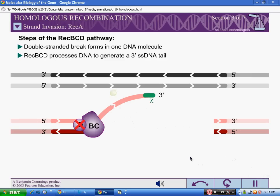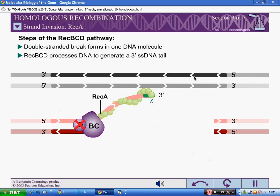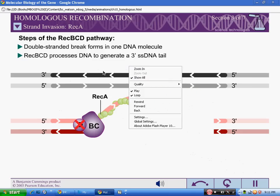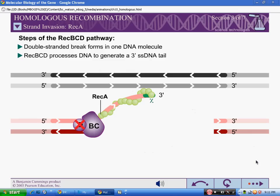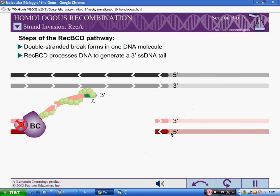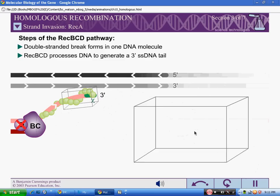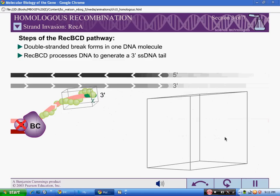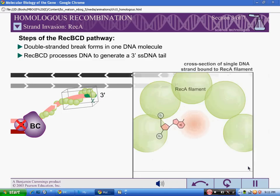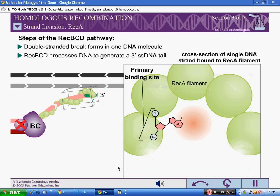REC-BCD helps to direct a protein called REC-A to the single-stranded DNA tail. The active form of REC-A is a protein-DNA filament, consisting of hundreds of REC-A subunits, with one REC-A for every 3 nucleotides of DNA. The filament has two distinct binding sites: a primary site with the single-stranded DNA molecule, and a secondary site.